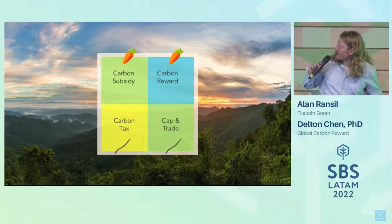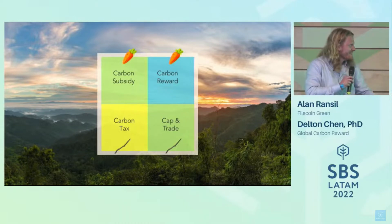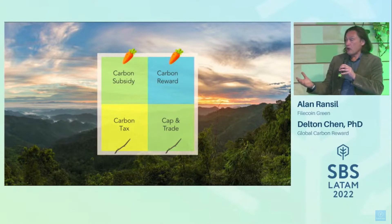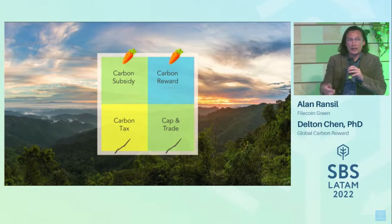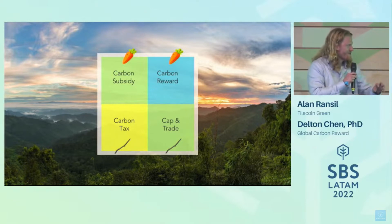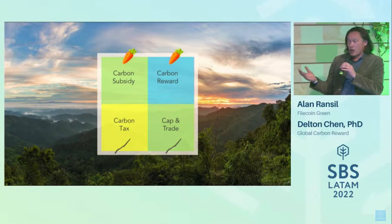A carbon subsidy is when a government offers money proportional to the mitigated carbon. An example is 45Q — an American policy that the Trump administration introduced for sequestration. Another example would be the Inflation Adjustment Act, which has money and tax deductions for mitigating actions. A carbon tax is when governments try to enforce a price on pollution in the simplest way possible. The problem with taxes is that economists love them, but they're very difficult to implement politically in many countries, including Australia and the US.